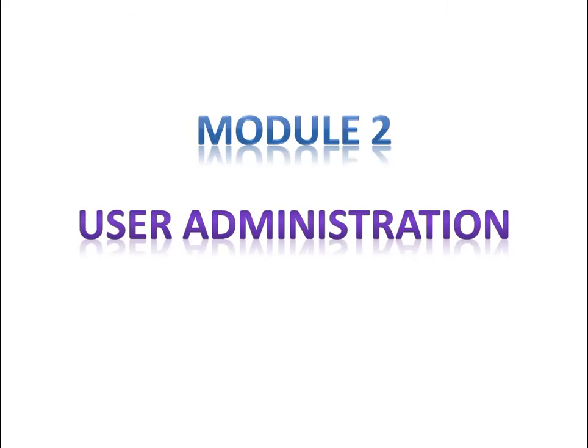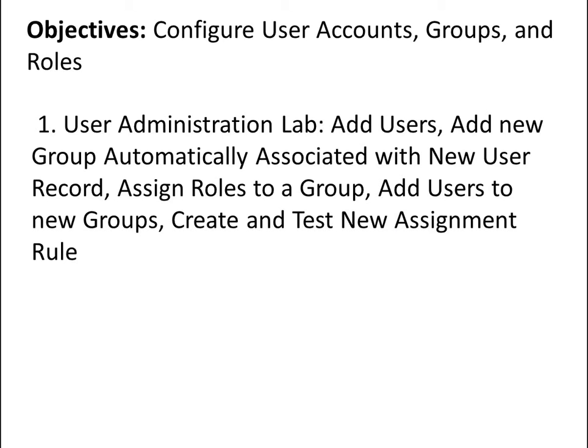The next module is Module 2, User Administration. This module is related to the user perspective — any administration activity related to users comes into this module. The objective is to configure user accounts, groups and roles, because every user in ServiceNow is related to a particular group and they have some roles. The User Administration Lab covers adding users and new groups automatically associated with the new user record, assigning roles to a group, adding users to new groups, and creating and testing new assignment rules.